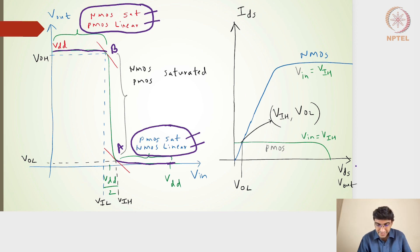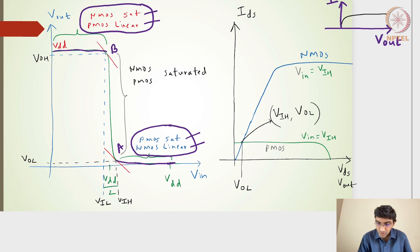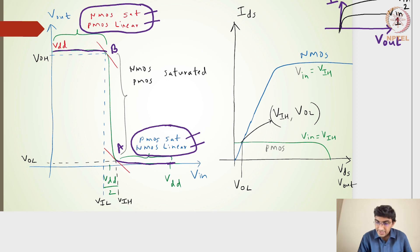I have drawn the IV characteristics just for reference. In previous lectures we drew the IV characteristics — the IDS versus VOUT profile. I drew one NMOS current profile for VIN = 1V, another for VIN = 2V, and so on. Similarly for the PMOS, one profile was drawn, and their intersection point was identified, with PMOS in linear and NMOS in saturation.